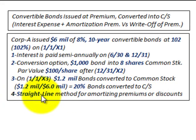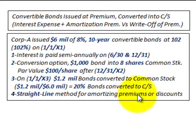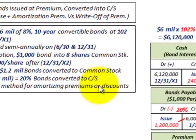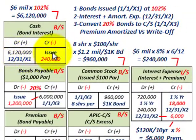We're going to be using the straight-line method for amortizing any premiums or discounts, and in this example it's going to be a premium. So let's go and look at how we'd record these entries.